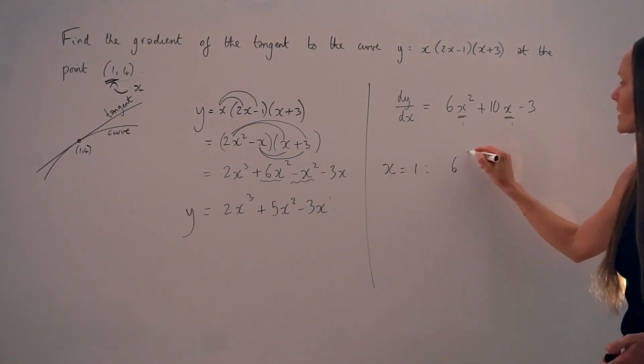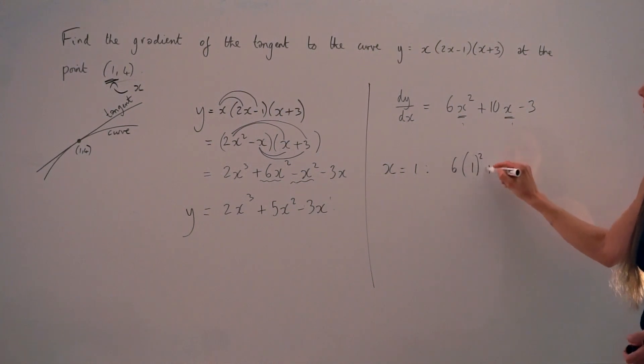So that I have 6 lots of 1 squared plus 10 lots of 1 minus 3. And if I work that out, 1 squared is just 1 times 1, which is 1. And if I times that by 6, I get 6. 10 times 1 is 10. And then I'm subtracting 3. So 6 plus 10 is 16. Take away 3 is 13.